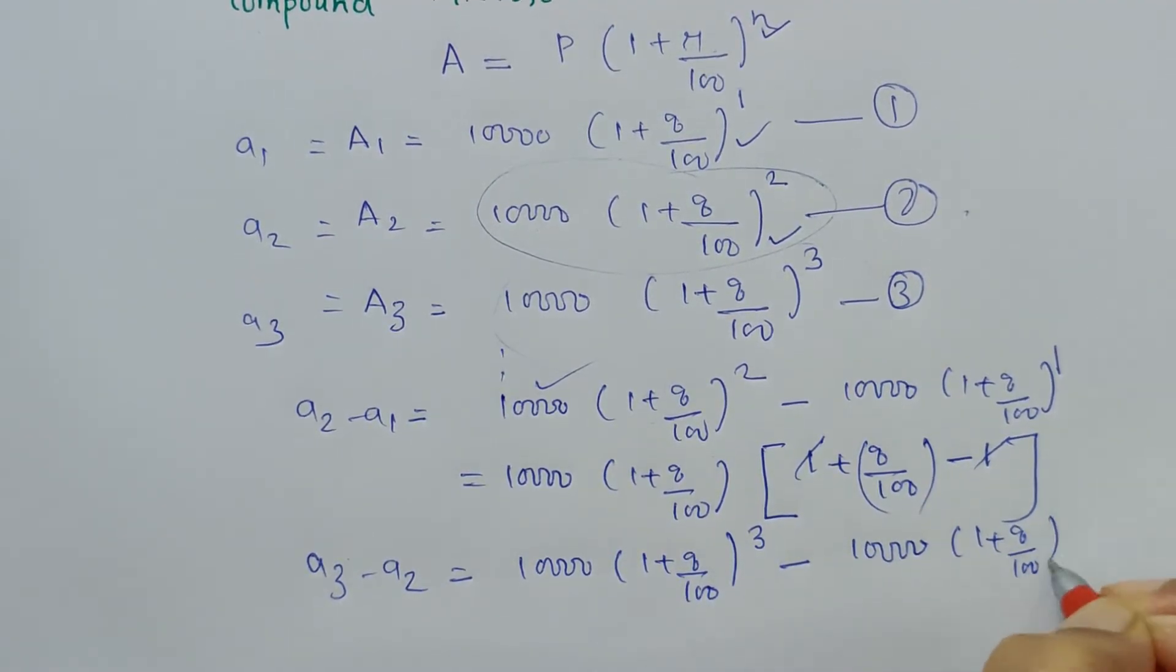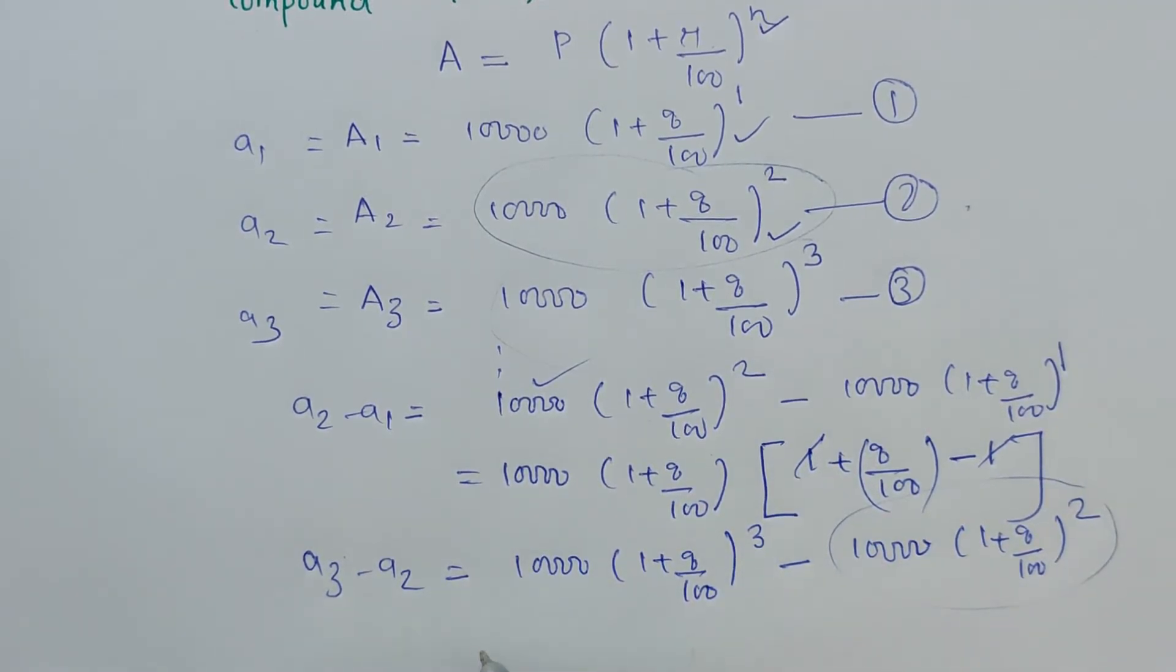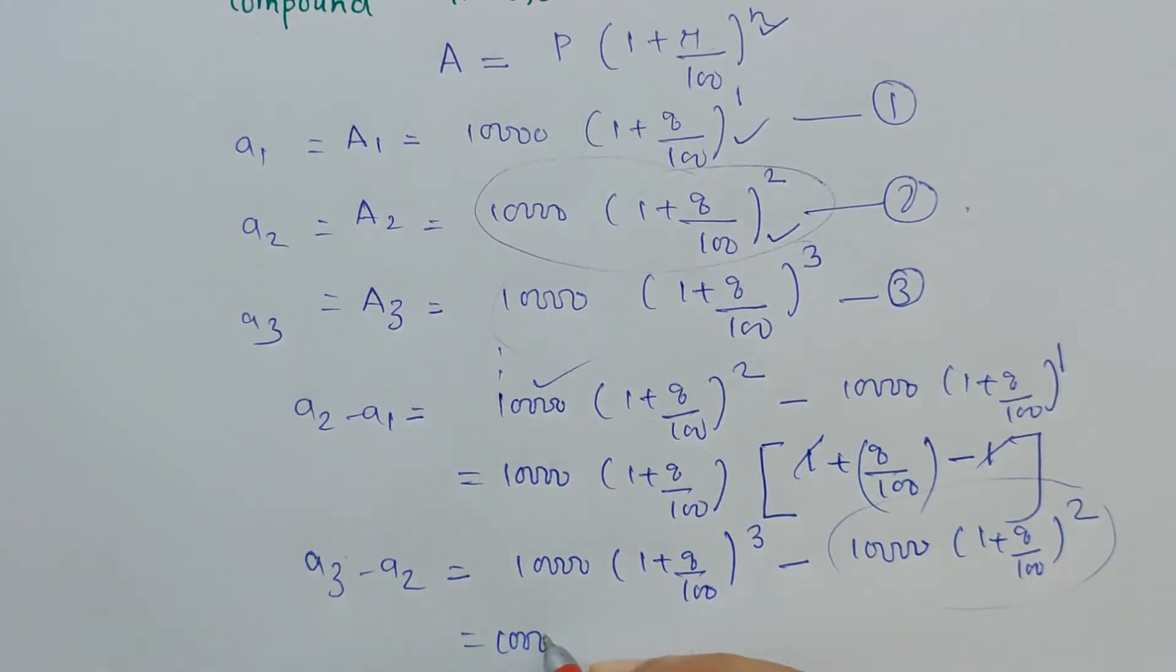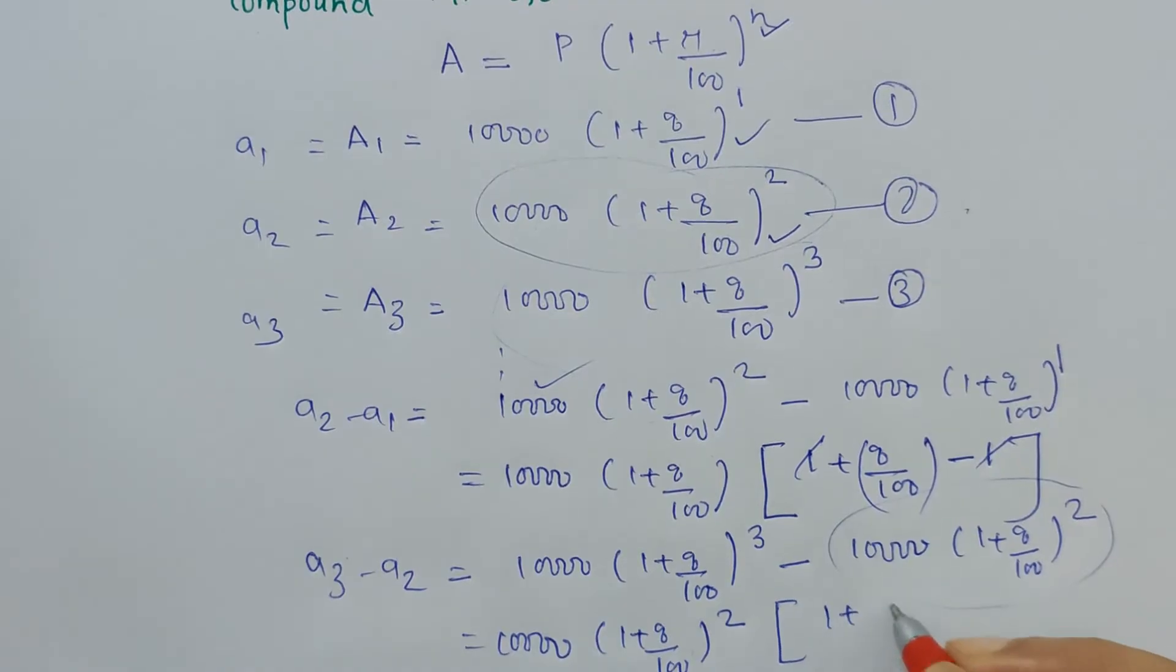We get 10,000(1 + 8/100)^3 - 10,000(1 + 8/100)^2. So again here, this whole square term can be taken outside. So 10,000 is common in both the terms, and (1 + 8/100)^2 is common.